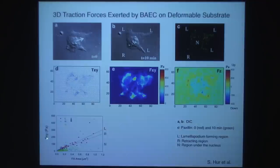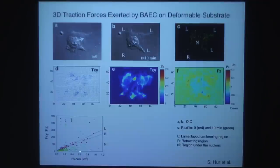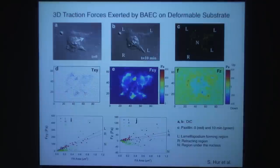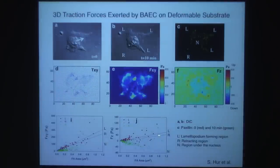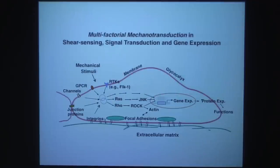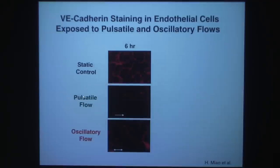The forces in the x-y direction can be related to focal adhesion area from paxillin staining — whether at the leading edge, back side, or nucleus region, each region's force correlates with focal adhesion area. In the z-direction, the leading and retracting areas are upward (positive), while the nuclear region is negative (downward). Junction proteins can also affect endothelial cell behavior: VE-cadherin staining shows very nice junction structure in static conditions.